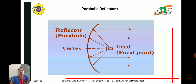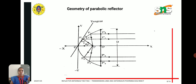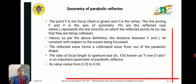A parabolic reflector has a common construction where the parabola acts as the reflector and the feed point is at the focal point, where a horn antenna feed is used. In the geometry of the parabolic reflector, point F is the focus and V is the vertex. The line joining F and V is the axis of symmetry. PQ represents the reflected rays, and L represents the line directrix on which the reflected points lie.